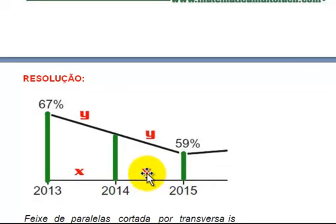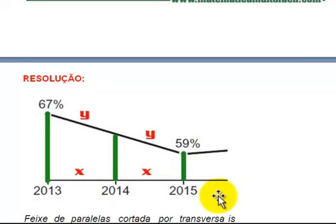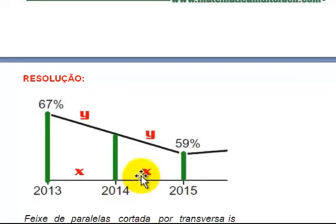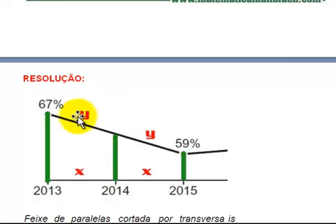Aí entra o detalhe de o gráfico ser linear. Lembra de retas paralelas cortadas por transversais? A lei linear de Tales fala o quê? Os segmentos sobre uma transversal são proporcionais aos segmentos sobre outra transversal. Isso é uma transversal, isso é uma transversal. Então, X está para X assim como Y está para Y — ou seja, mantém-se a proporcionalidade.